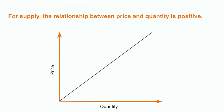The relationship between price and quantity is hence positive. We represent this relationship as follows: on the y-axis, price; on the x-axis, quantity. The relationship, geometrically speaking, has a positive slope.